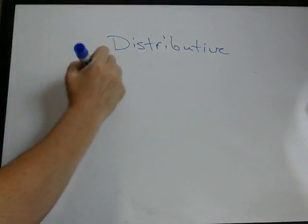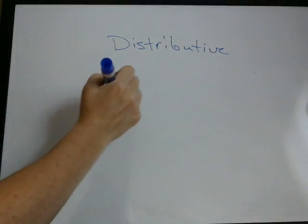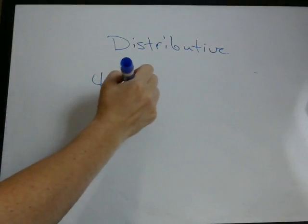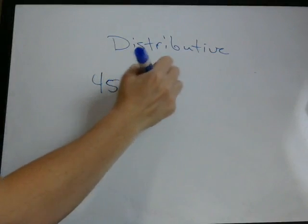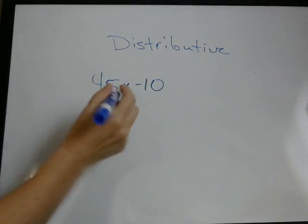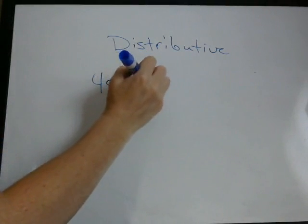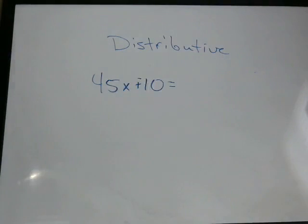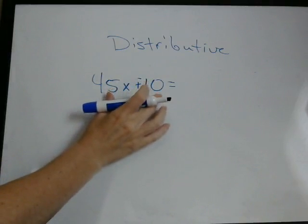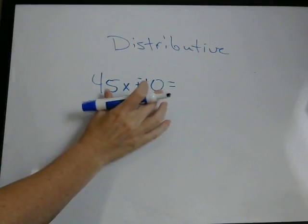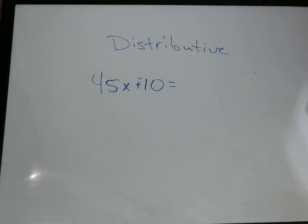If we're going to do 45x minus 10. Again, if it helps you, you can think of this as a plus negative 10. What number goes into both 45 and 10? The largest number that goes into both 45 and 10 evenly. That would be 5. So we pull the 5 out.